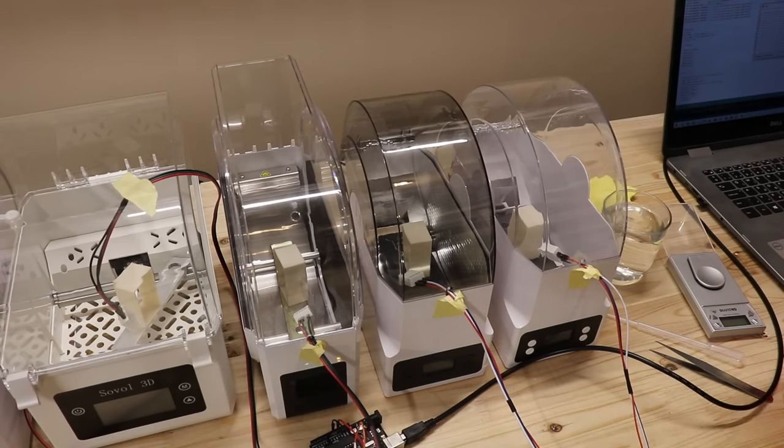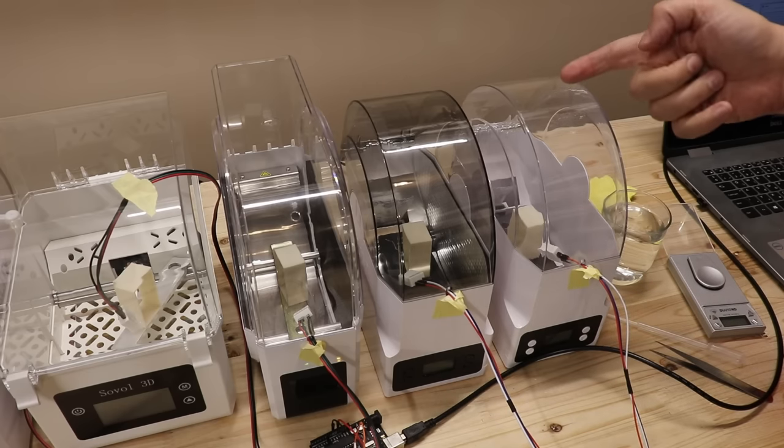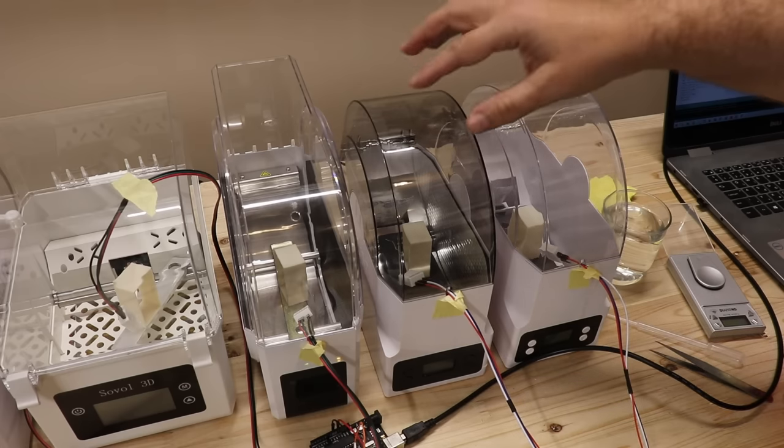Actually first I want to introduce the competitors. The first box is the E-Sun E-Box filament dryer, and this is the newer version, E-Box Lite. But this one is improved.